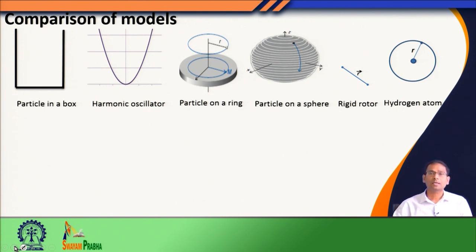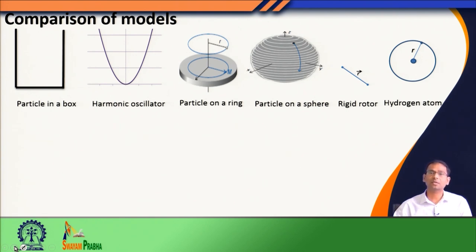We dealt with this system by considering only one particle and neglected interactions with other particles, so the problem was simpler than a typical molecule. However, in several cases where conjugated systems are present, the pi electrons and sigma electrons are separable, and we can treat the delocalization of pi electrons effectively with a particle in a box kind of problem.